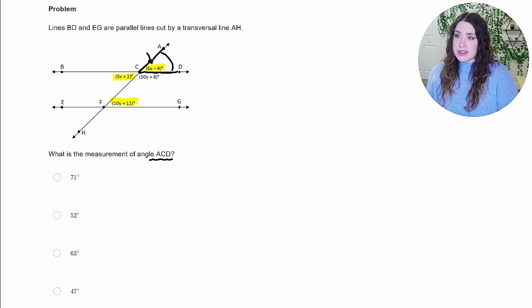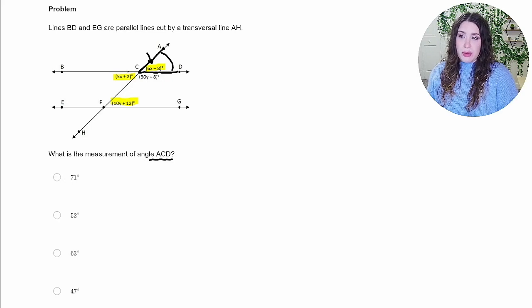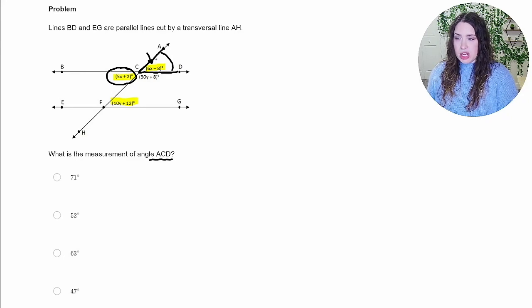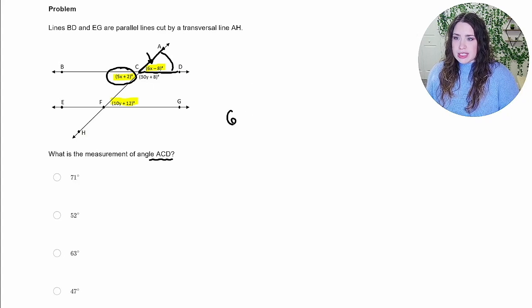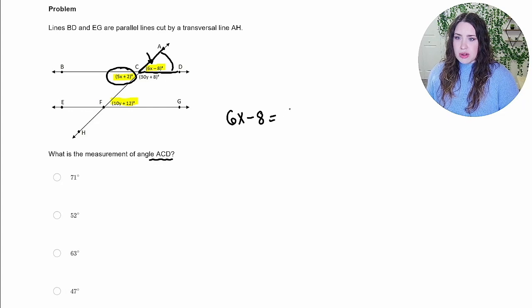You'll notice it involves the variable X. So as I'm picking between these two angles to set up an equation with, I want to go ahead and use this angle because they both use X and we're not dealing with X's and Y's in the same equation. So since these vertical angles are equal, I'm going to go ahead and set them equal. So 6X minus 8 is going to equal 5X plus 2.